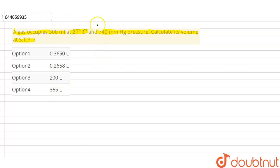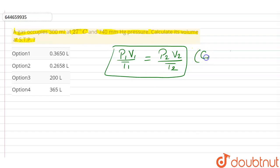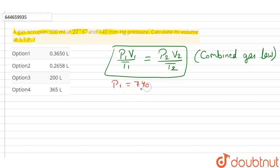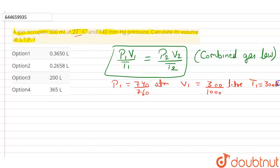We will apply the combined gas law here, which is P1V1 / T1 = P2V2 / T2. Here P1 is 740 mm Hg, converting it into ATM: 740/760 ATM. V1 is 300 ml, converting it into litres: divided by 1000. T1 is given as 27 degrees Celsius, which is 300 Kelvin.